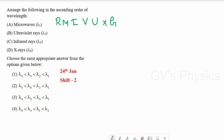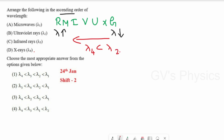Among the 7, radio wave has the longest wavelength — because of that it can travel larger distances — and gamma has the shortest wavelength. They ask us to arrange in ascending order. In the options, we don't have gamma, so the first one is X-ray (lambda 4), then ultraviolet (lambda 2), then infrared (lambda 3), and last is microwave (lambda 1) which has the longest wavelength. We can see this order in option 3, so option 3 is the right answer.